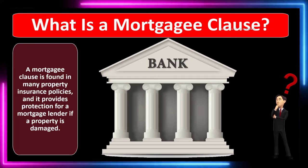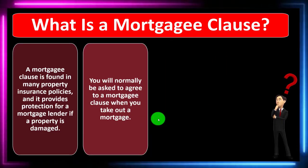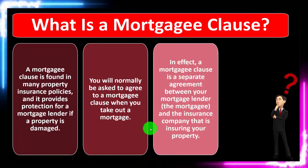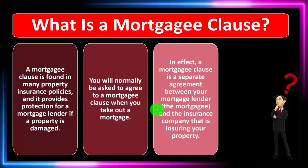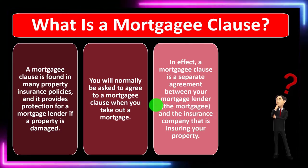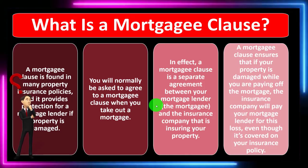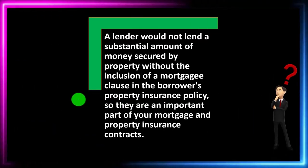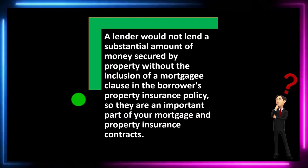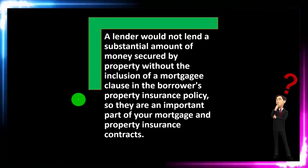The bank only gets a say if you default on the payments — that's when they have recourse. You will normally be asked to agree to a mortgagee clause when you take out a mortgage. In effect, a mortgagee clause is a separate agreement between your mortgage lender — the mortgagee — and the insurance company that is insuring your property. A mortgagee clause ensures that if your property is damaged while you are paying off the mortgage, the insurance company will pay your mortgage lender for this loss, even though it's covered on your insurance policy. A lender would not lend a substantial amount of money secured by a property without the inclusion of a mortgagee clause in the borrower's property insurance policy.